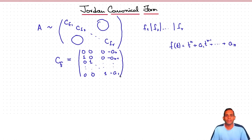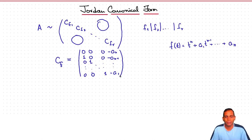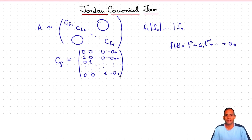The problem with the rational canonical form is that it does solve the similarity problem — you can check if two matrices are similar by computing their rational canonical forms — but the problem is that it obscures the nature of a matrix.